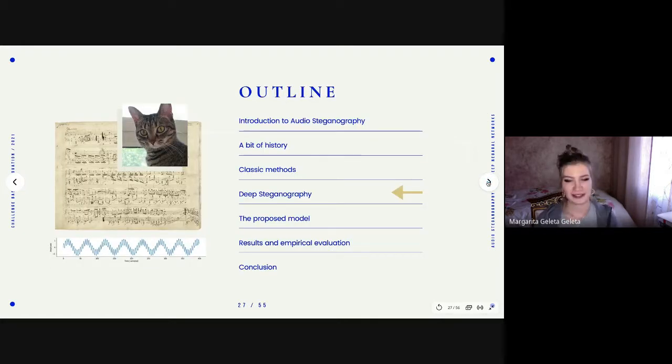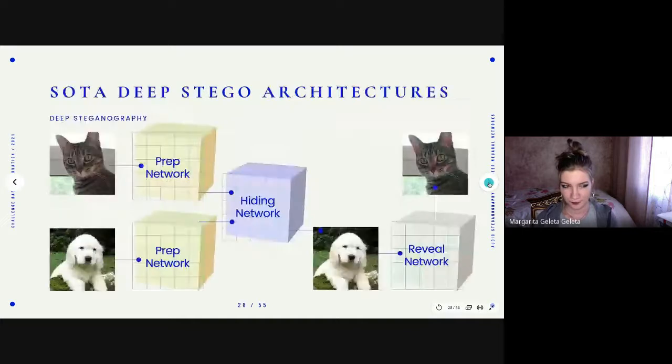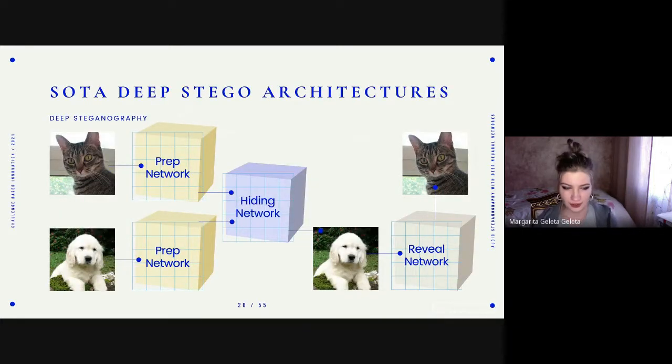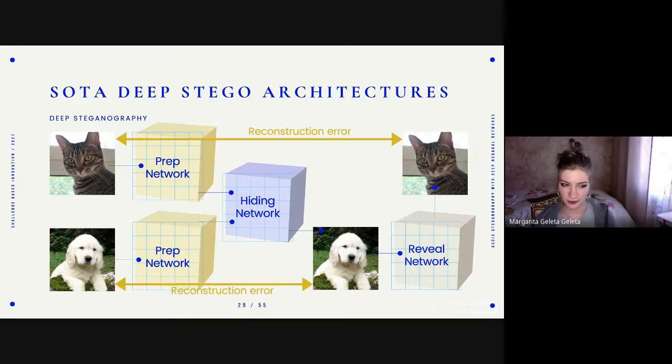Now that we have seen all these classic methods, let's dive into deep steganography. What are the state-of-the-art deep steganography architectures? This is actually what Christina has been doing. The idea is the following: imagine I want to hide this nice cat and this pretty dog. First of all, we preprocess each image with a preprocessing network. Then we combine those images with a hiding network. We obtain the dog with a hidden cat within it. And finally, we use the reveal network to extract this cat from this image of the dog. And the reconstruction error we use to train this network is the addition of the reconstruction error of the secret and revealed image, and the cover image with the container stego image.